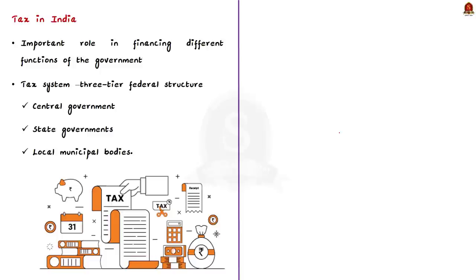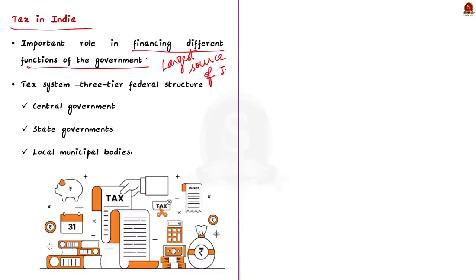We all know that people pay taxes to the government in some form, and these taxes play an important role in financing different functions of the government. Taxes are considered the most important and largest source of income for the government. As far as the Indian tax system is concerned, it is well structured with a three-tier federal structure, consisting of central government, state governments, and local municipal bodies.